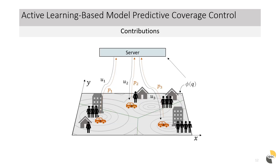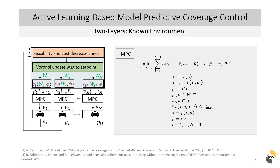For all of the following coverage frameworks, the existence of a central server receiving position and density information is assumed. The first framework is called the two-layer approach given its hierarchical structure, inspired by the reference governor. The Voronoi partitions are formed with respect to the agent's setpoint position and the centroid of each partition is passed as a reference to each agent's MPC. The MPC is formed without any terminal ingredients and a partition update is only performed if feasibility and a locational optimization cost decrease are ensured.